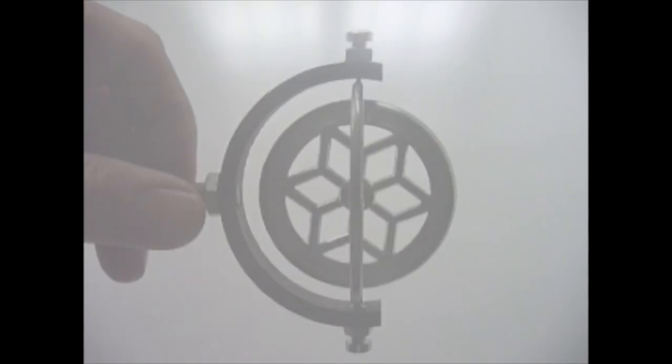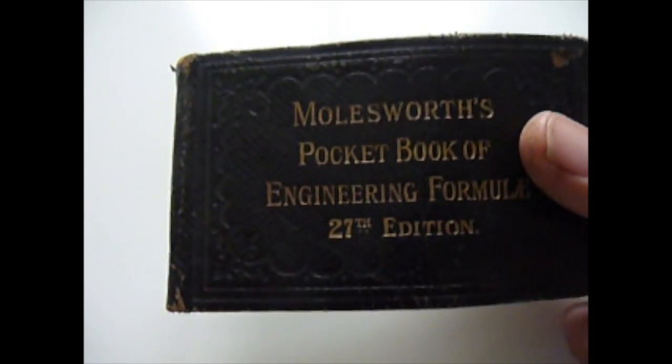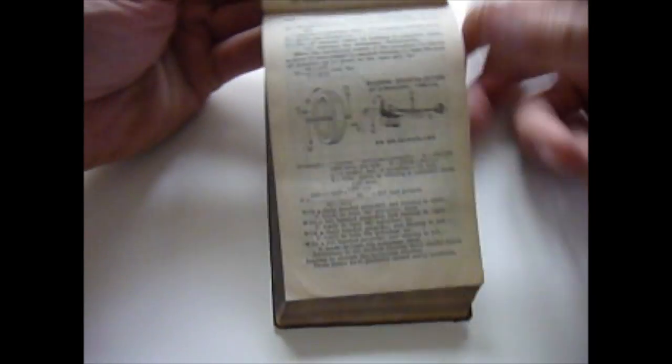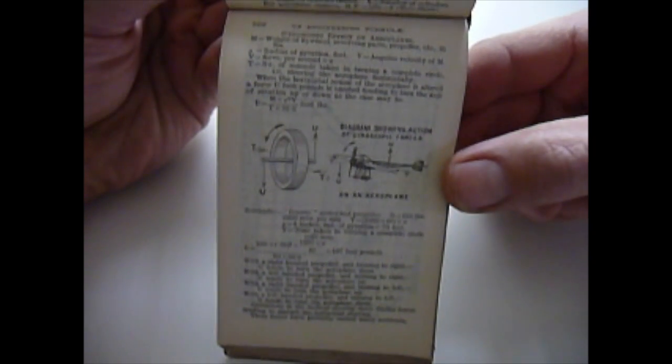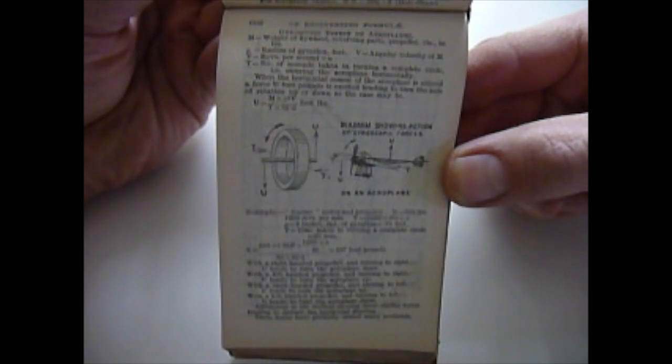Gyroscopic effect can also occur when a gyro is moving around a distant axis. This early 20th century engineering manual gives formula for its action on early aircraft, adding that it was probably the cause of many accidents.